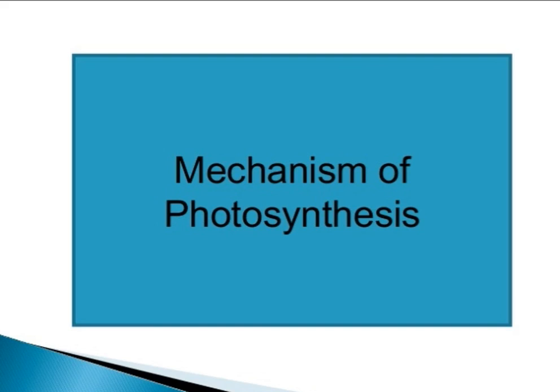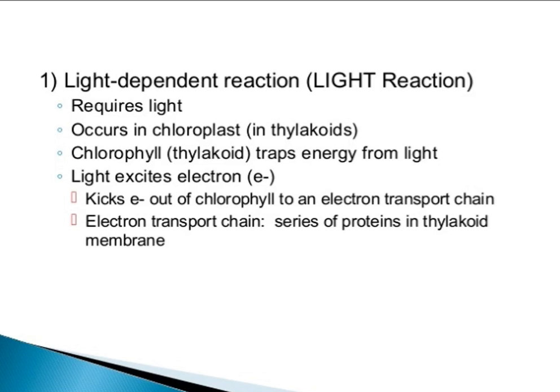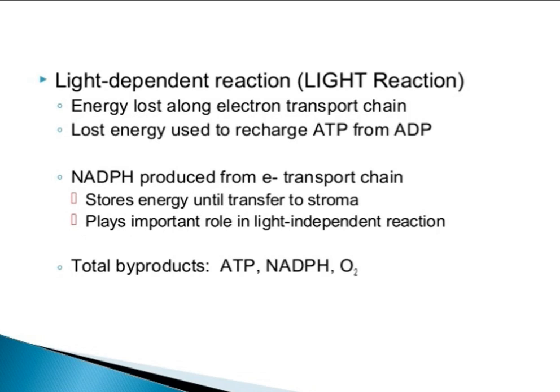The mechanism of photosynthesis involves two reactions: the light-dependent reaction and the light-independent reaction. The light-dependent reaction, also known as the light reaction, requires light and occurs in the thylakoids of the chloroplast. Chlorophyll absorbs light, which excites electrons and kicks them out of the chlorophyll into an electron transport chain — a series of proteins in the thylakoid membrane. Energy lost along the electron transport chain is used to regenerate ATP from ADP, and NADPH is produced. The products are ATP, NADPH, and O2.